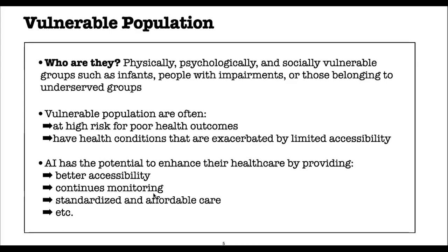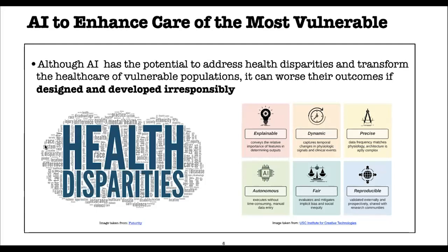Automated technology can actually improve accessibility and provide continuous monitoring. For example, it can continuously monitor infants when they are left unattended in the NICU, and it can also monitor older people who live alone. Automated technology can also provide standardized and affordable care. Although many recent works report the potential of AI in transforming healthcare and decreasing health disparities, irresponsible development of AI can create technical and ethical issues that make things worse for vulnerable patients.